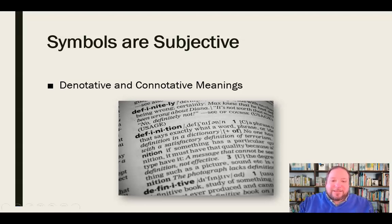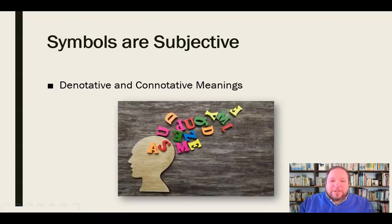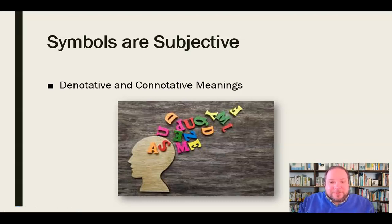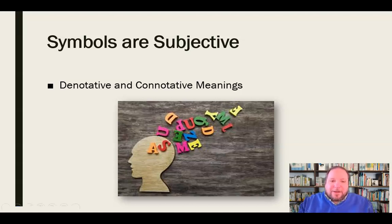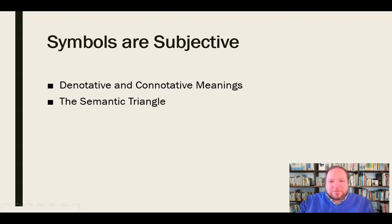The other type of meaning is the connotative meaning, and that depends on the person and how they interpret it. It depends on how it goes through their psychological process, their senses, and their frame of reference. So the connotative meaning can vary from person to person. Years ago, Ogden and Richards put forth a representation called the semantic triangle, which represents this idea of the different meanings a symbol can have.